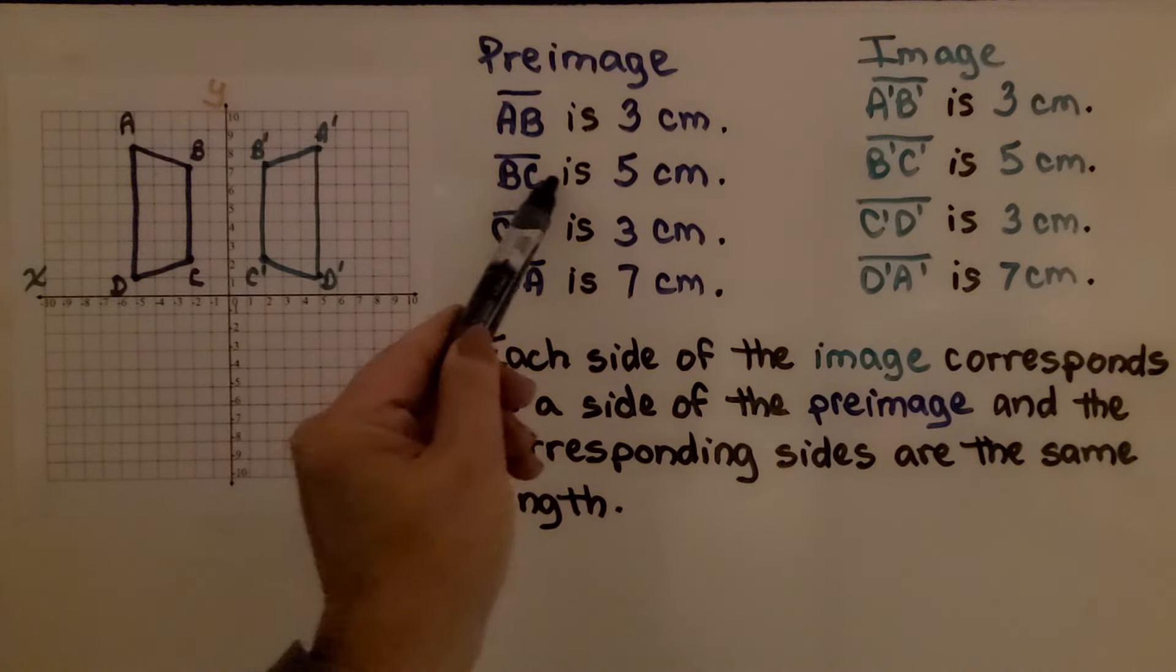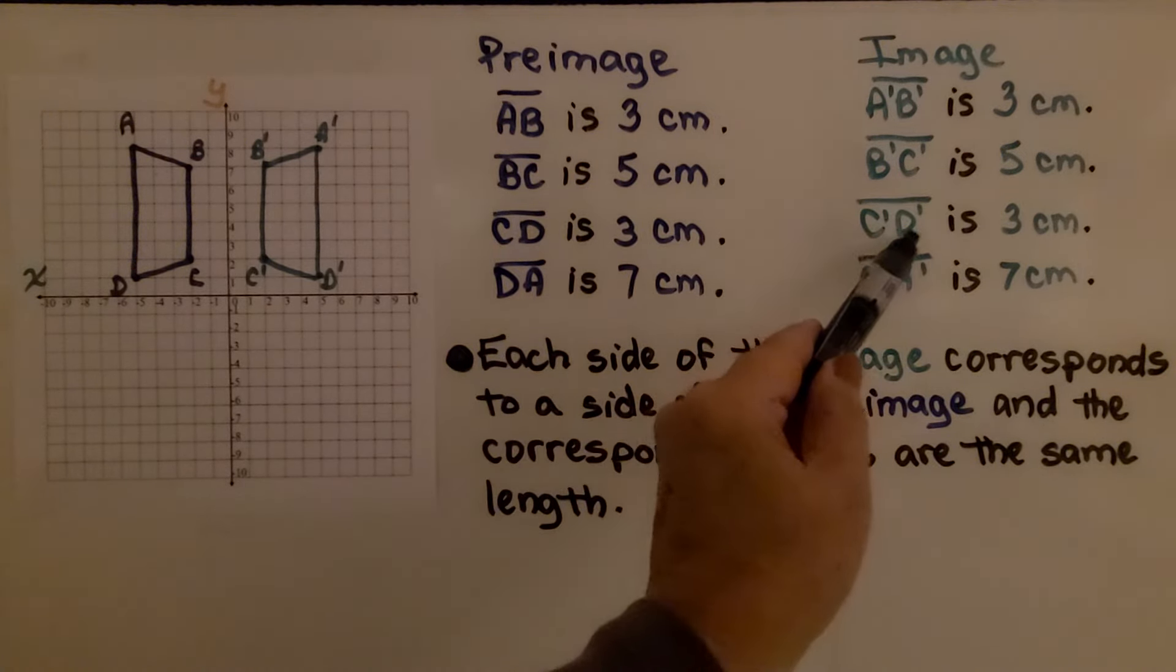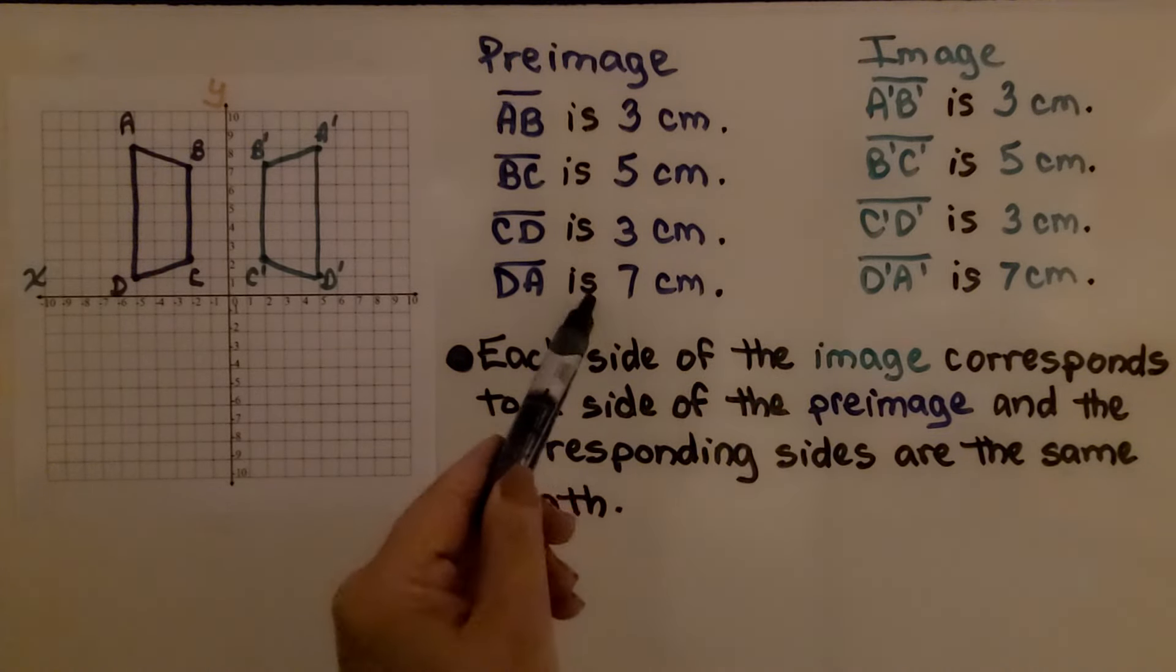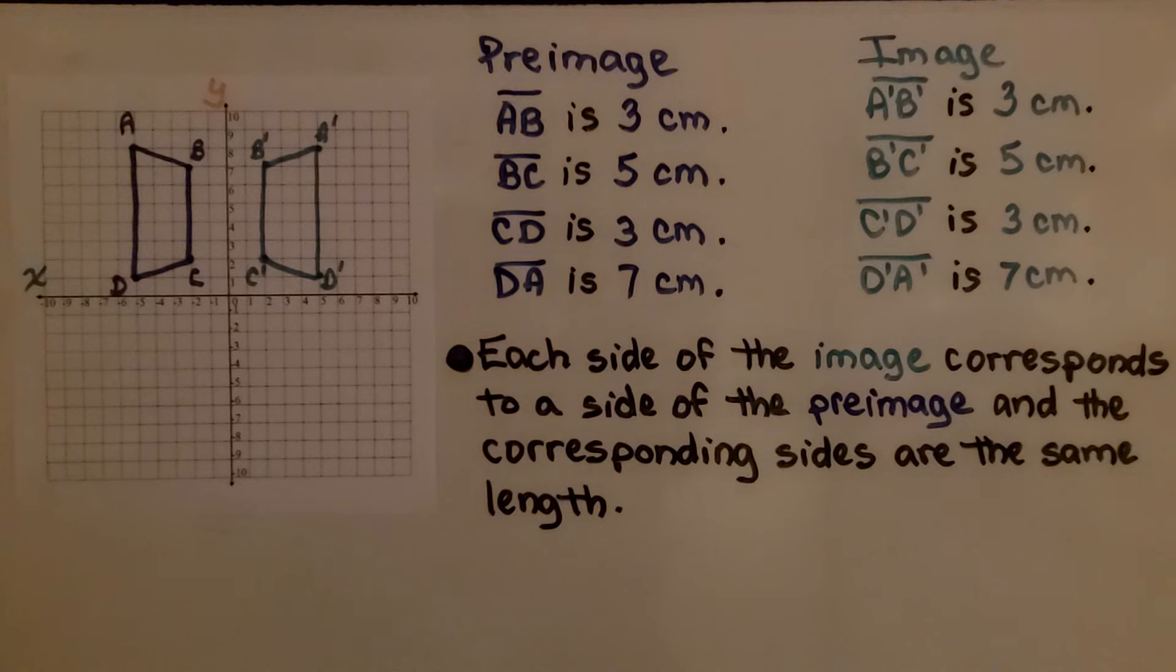just like line segment BC. And C'D' is 3 centimeters, and D'A' is 7 centimeters. Each side of the image corresponds to a side of the pre-image, and the corresponding sides are the same length.